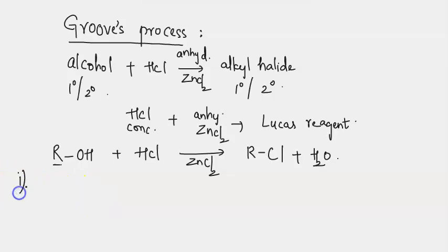The first step for the conversion of alcohol into alkyl chloride will be ROH plus, since we have taken acid, it releases H+ ions which converts into ROH2+.